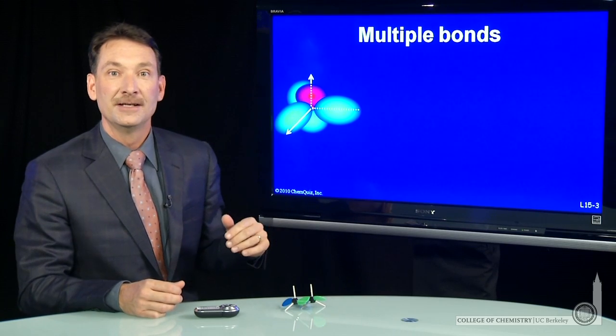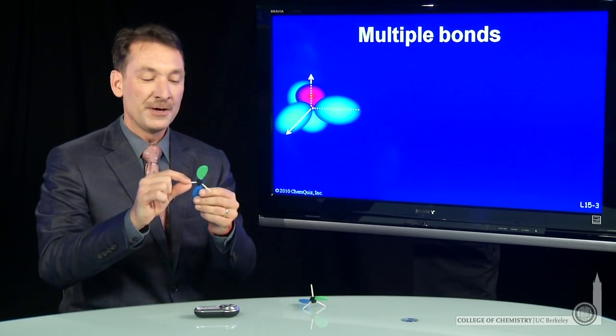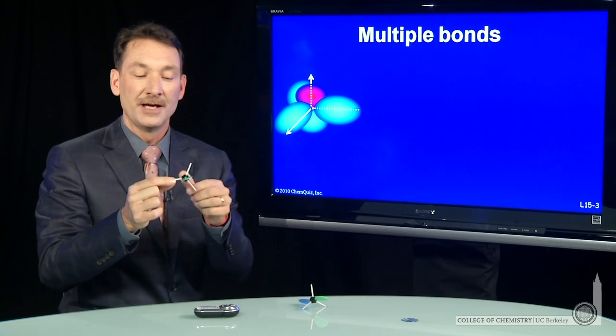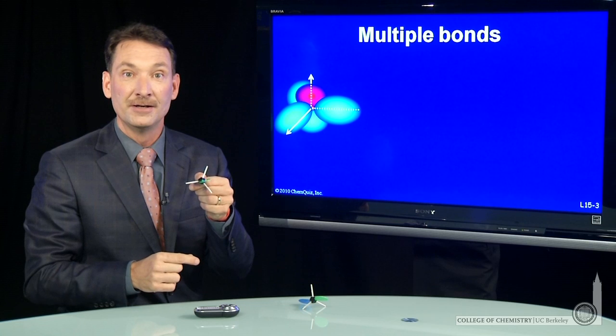I have three equivalent sp2 orbitals. And I have a model that looks like that here. The three bonds here at 120 degrees from each other are sp2 hybrid orbitals.